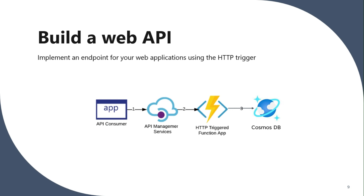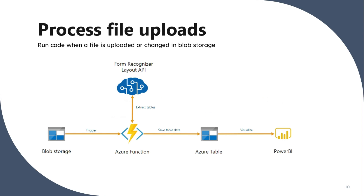The second use case of Azure function is processing a file upload — run code when a file is uploaded or changed in a blob storage. Whenever a new file such as an image is uploaded, it triggers the Azure function. Azure function works in the form of a trigger, so the trigger here is blob storage, which processes the image, saves it in an Azure table, and presents it in Power BI.